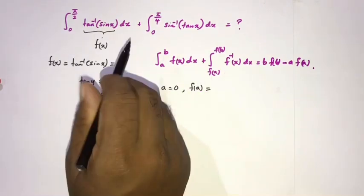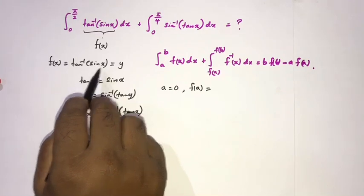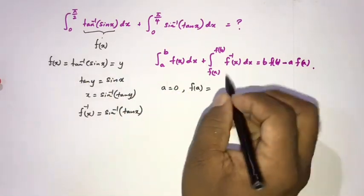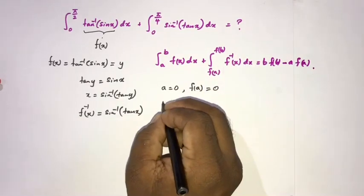If we find f(a), we know f(a) is equal to inverse tan of sine of 0. Sine of 0 we know is 0, arctan of 0 is also 0.